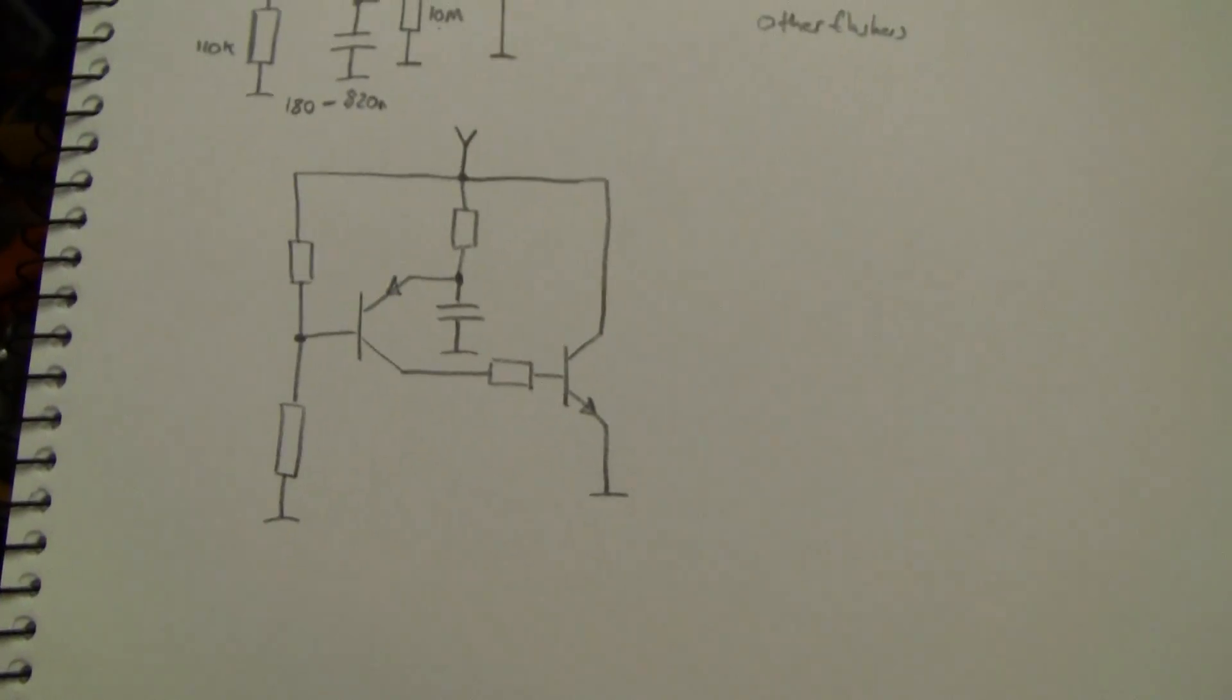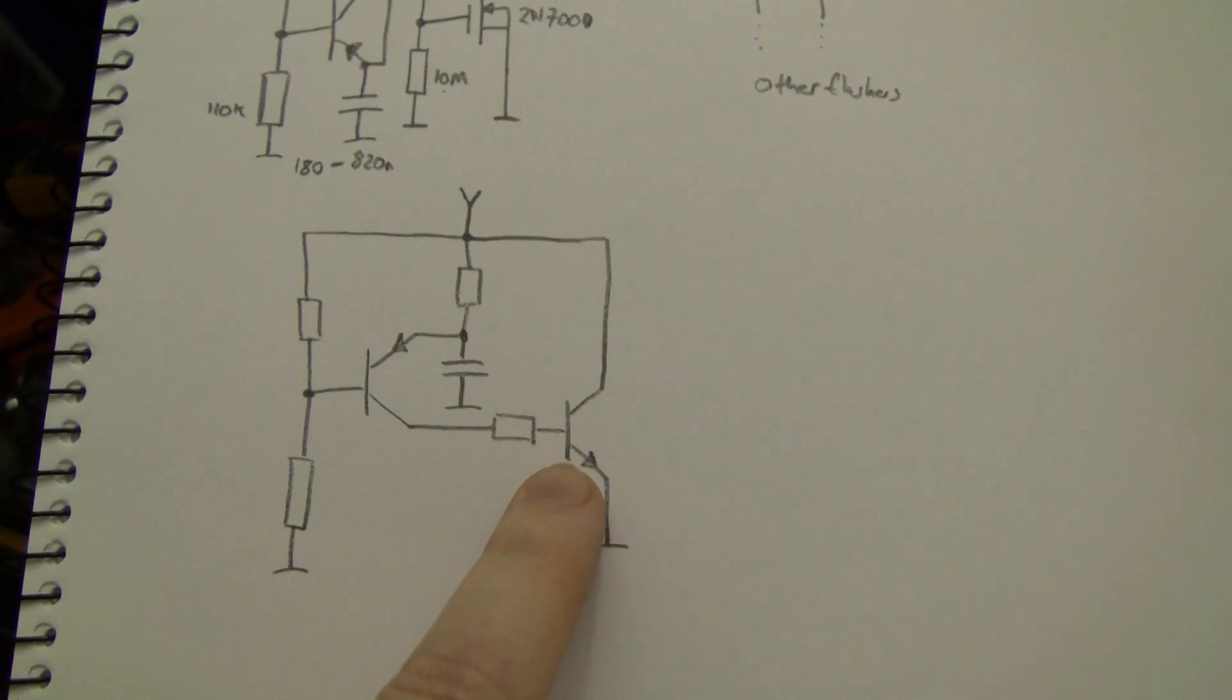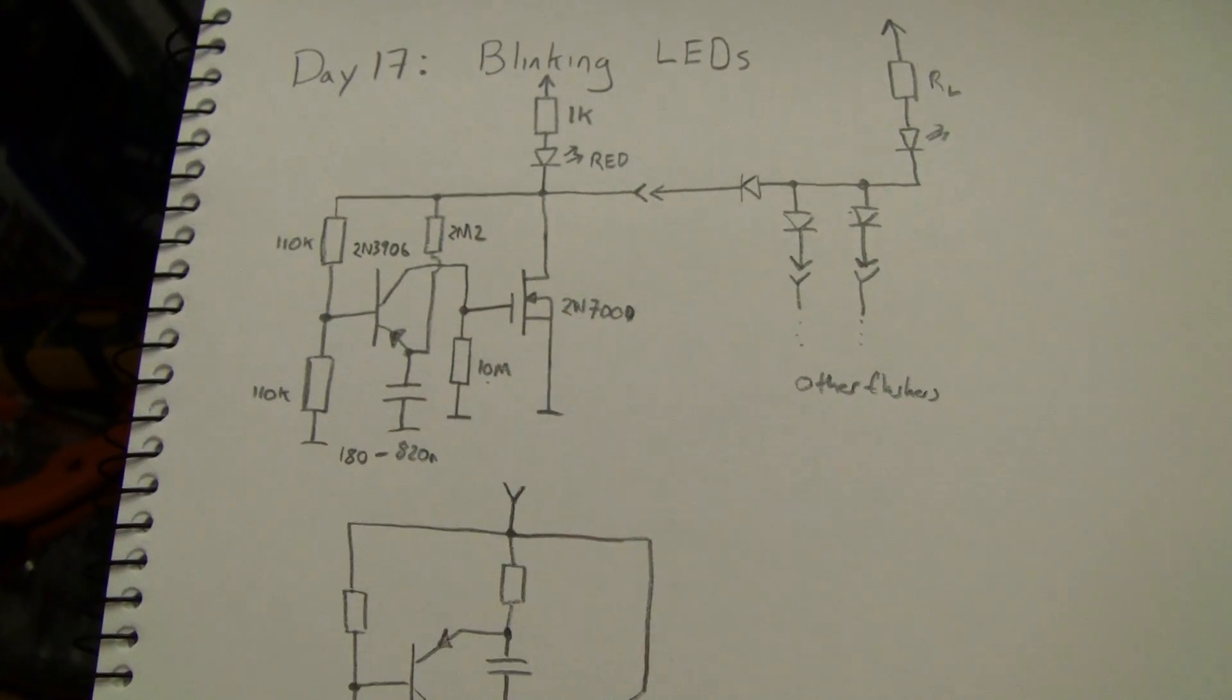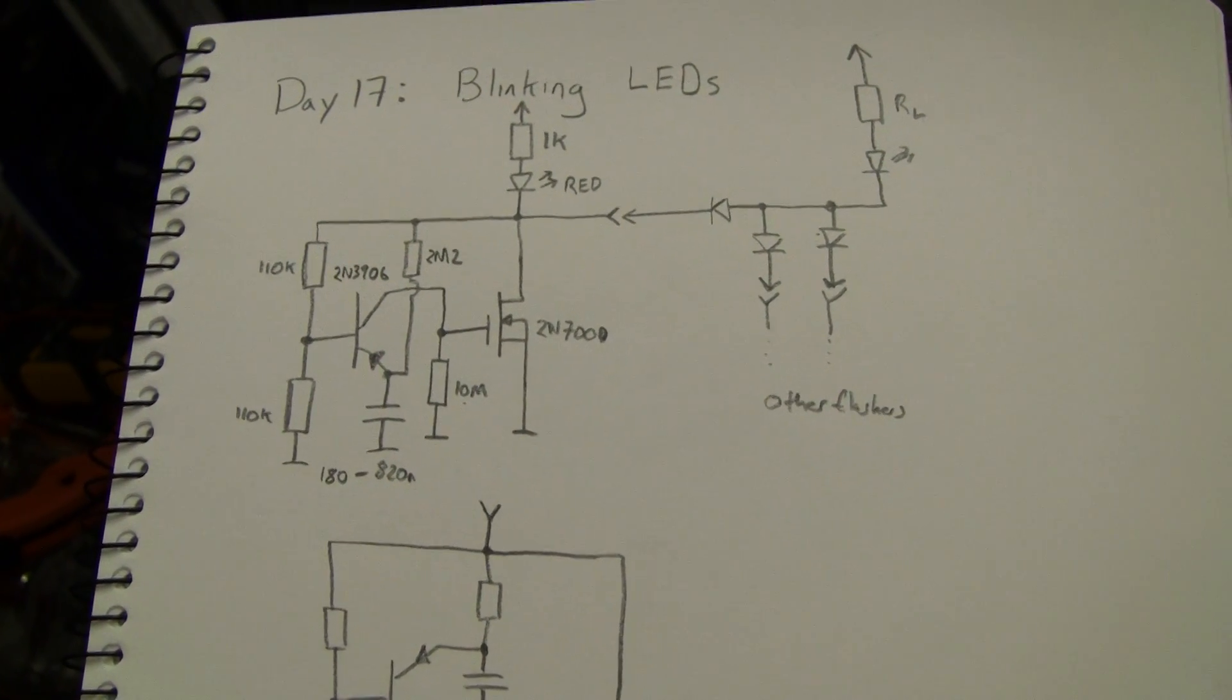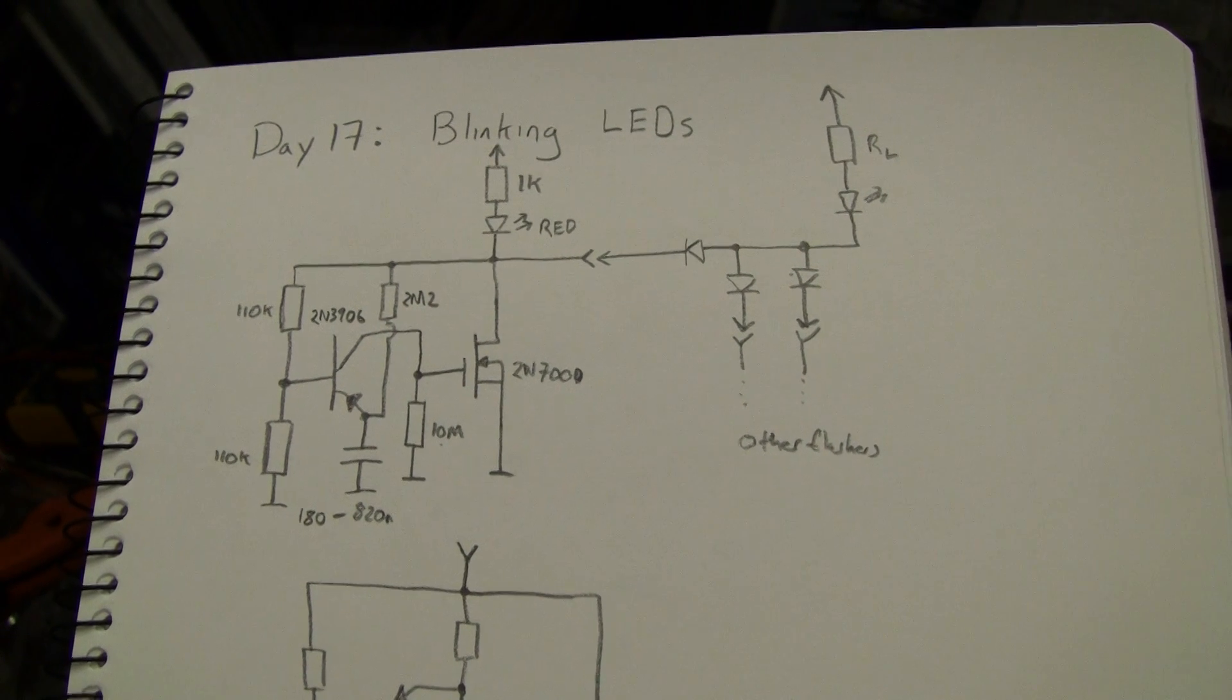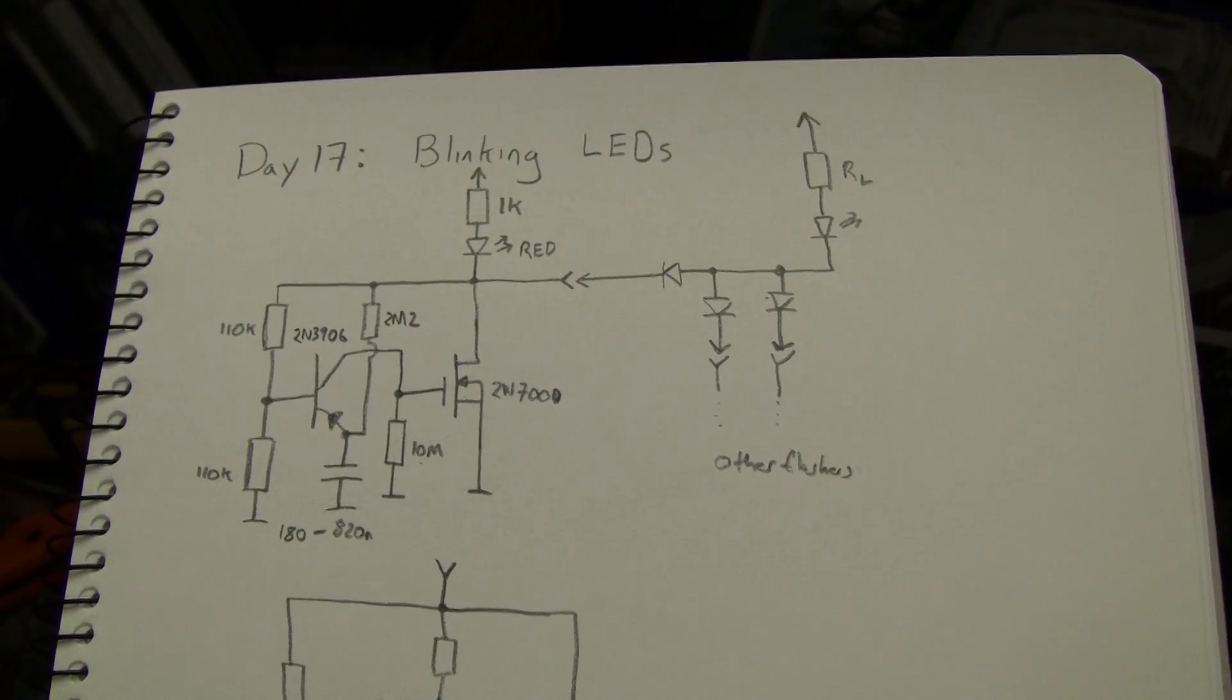You might be more familiar with it drawn like this with the BJT. But I've decided to use a MOSFET in this case, I'm using a 2N7000, it's got a reasonable drain current limit so that we can flash large strings of series parallel connected LEDs.